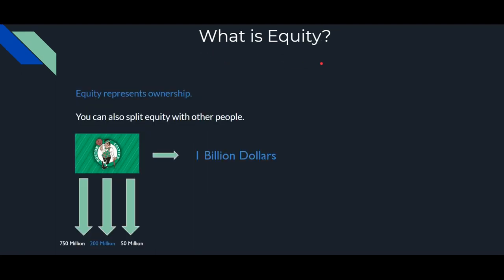What is equity? Equity represents ownership, and you can split equity with other people. For example, let's say the previous owner of the Boston Celtics wants to sell the team for a billion dollars. One investor puts in $750 million, the second puts in $200 million, and the third puts in $50 million. The first investor will own 75% of the team, the second will own 20%, and the third will own 5%.